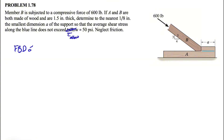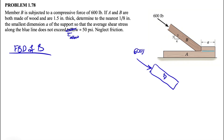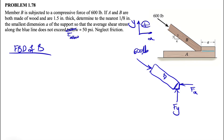We are in equilibrium, so we can go with the free body diagram of each part. Let's start with the free body diagram of part B. We have member B with 600 pounds force on one side, and on the other side we can consider two different forces: FY and FX.